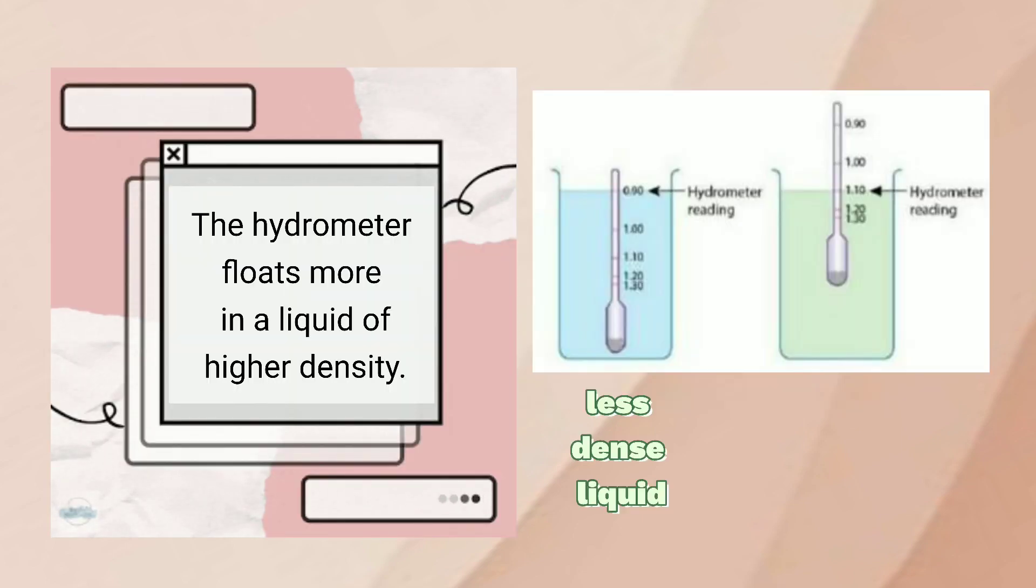The hydrometer floats more in a liquid of higher density. The picture shows two types of liquid with different densities. The hydrometer reading in less dense liquid is smaller because the hydrometer floats less, which means that it sinks.